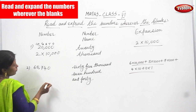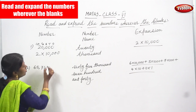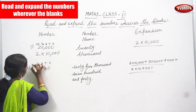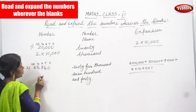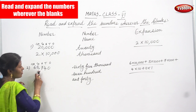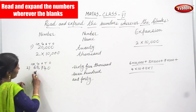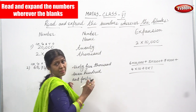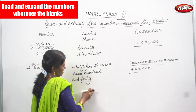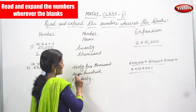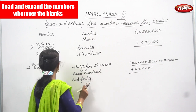The next sum is 65,740. Before that you have to write the place value: ones, tens, hundreds, TTH (10,000). So 65,740 — I have written the same number in words: sixty-five thousand seven hundred forty.